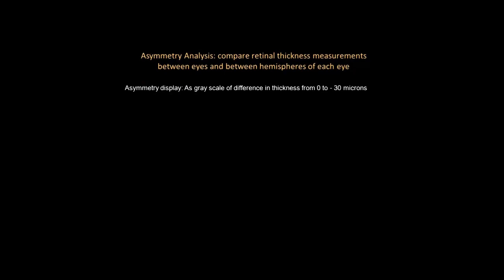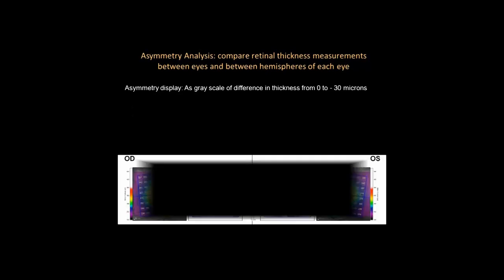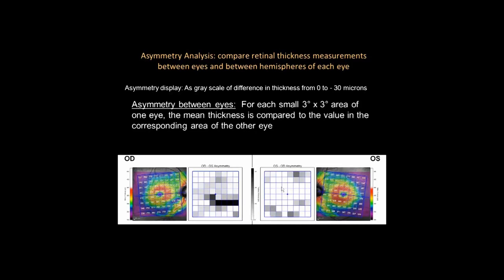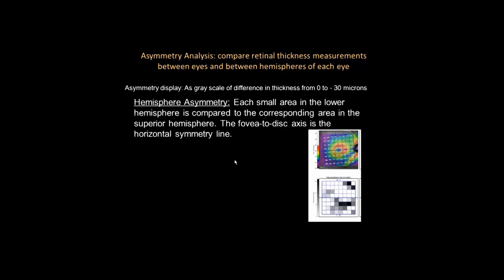We took advantage of symmetry in nature and found that macular thickness maps of the two eyes of an individual are very symmetric. Since glaucoma is typically an asymmetric disease in the early to moderate stage, any asymmetry between the two eyes becomes readily apparent. This is displayed as an asymmetry grayscale plot showing difference in thickness from 0 to minus 30 microns between the two eyes. For each small 3×3 degree area, the mean thickness is compared to the corresponding area in the other eye. We also recognize that for one-eyed patients, the asymmetry between the upper and lower hemispheres, using the fovea-to-disc axis as the horizontal symmetry line, is also important.